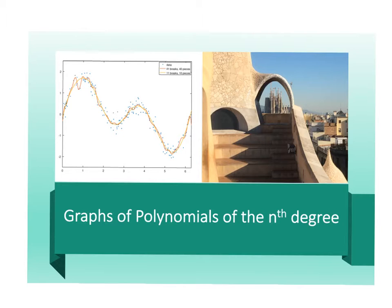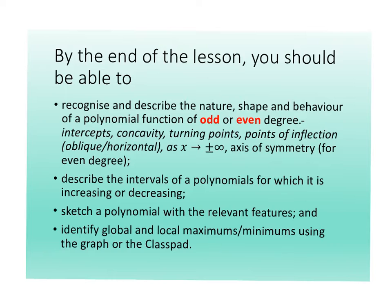What we need to do today is identify turning points. You're looking at the local minimum here and here. In terms of global — because this might go up and up — it might be bigger than that number, so you may have a global maximum. This is just what you call local. You must be able to recognize and describe the nature, shape, and behavior of a polynomial function of odd and even degree — things like intercepts, concavity, turning points, points of inflection (oblique and horizontal), and as x approaches positive or negative infinity, what does y approach.